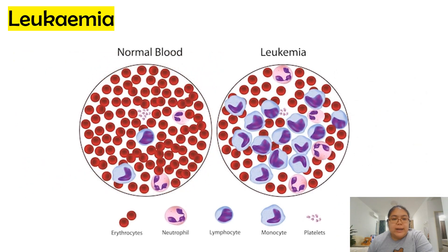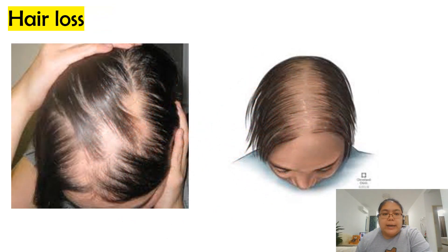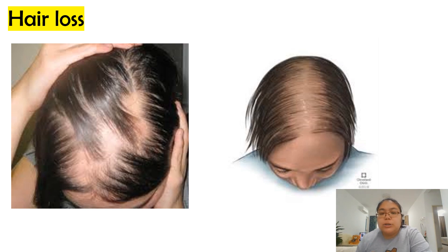The next somatic effect is leukemia, which means the white blood cell count becomes higher than the red blood cells — this is an effect of radiation. The last somatic effect is hair loss. When you are exposed to more radiation over a longer period of time, hair loss is another physical effect that occurs.